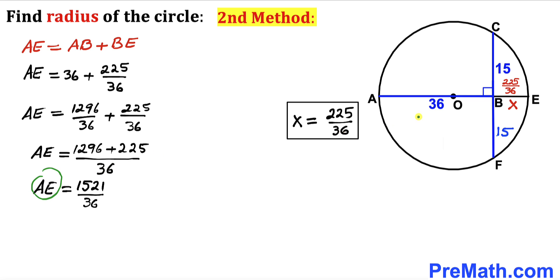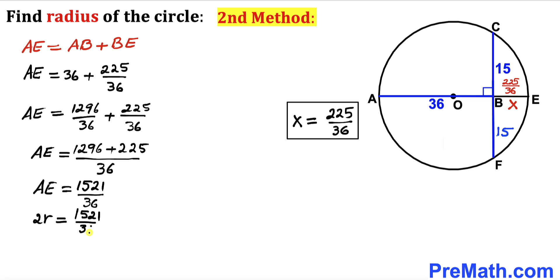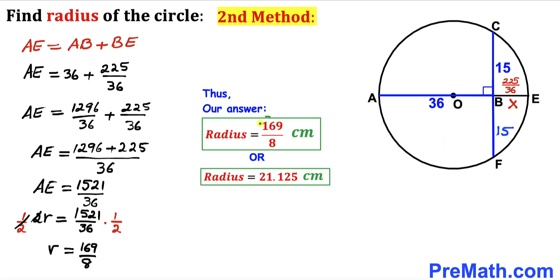We observe that AE is the diameter of the circle, so AE = 2R. Therefore 2R = 1521/36. Multiplying both sides by 1/2 to isolate R, our radius R simplifies to 169/8 centimeters, equal to 21.125 centimeters. That confirms the result using the second method.